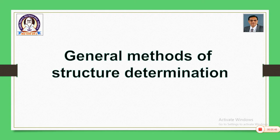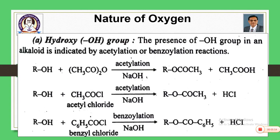We are going to deal with this concept in two parts. Today we deal with some of the methods. Alkaloids contain nitrogen essentially, but additionally they may contain oxygen, so oxygen will have different functional forms. Let us consider some of these forms and how they are detected or estimated. Oxygen is present in the form of a hydroxy group.